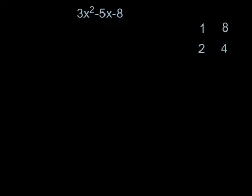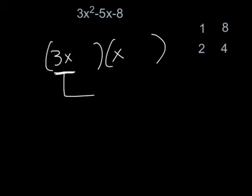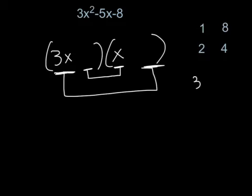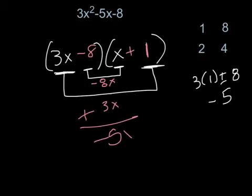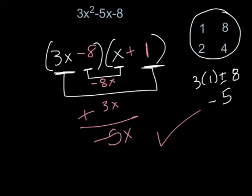The next one is 3x squared minus 5x minus 8. I'm going to do 3x and x. I need something that I can multiply by 3 and then add or subtract to the other number to produce negative 5. If I do 3 times 1 plus or minus 8, I would get negative 5. So if I put a positive 1 across from the 3 and a negative 8 on the other side, this produces 3x and negative 8x — when I add them together, I get negative 5x. With more practice, you'll realize that you are multiplying one of these numbers by 3 and adding or subtracting it to the other to figure out which numbers go where.